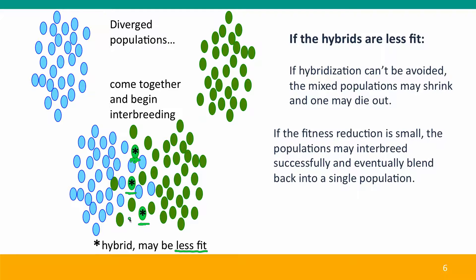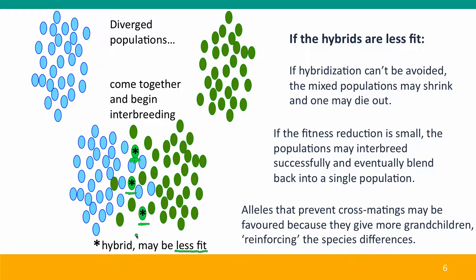If the fitness reduction is small, they may still eventually interbreed and blend back into a single population. But if the fitness reduction is large, alleles that prevent cross-breeding, you could think of them as mate recognition that can tell the difference between the blue individuals and the green individuals, these alleles would be favored because they prevent wasteful formation of hybrids, ensuring that individuals mate with other individuals who give the most offspring, the most grandchildren, and this can reinforce the species differences so that hybridization actually helps the species to become distinct.